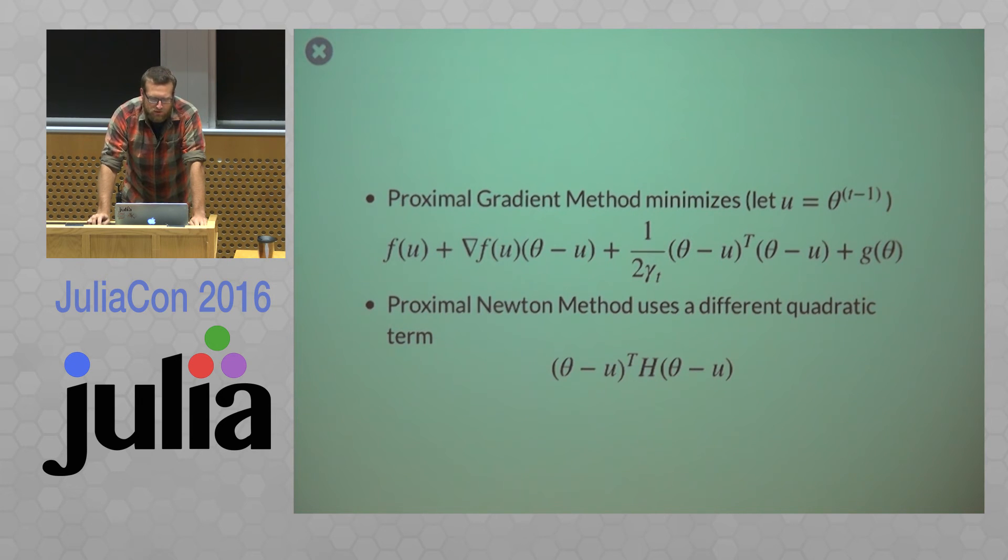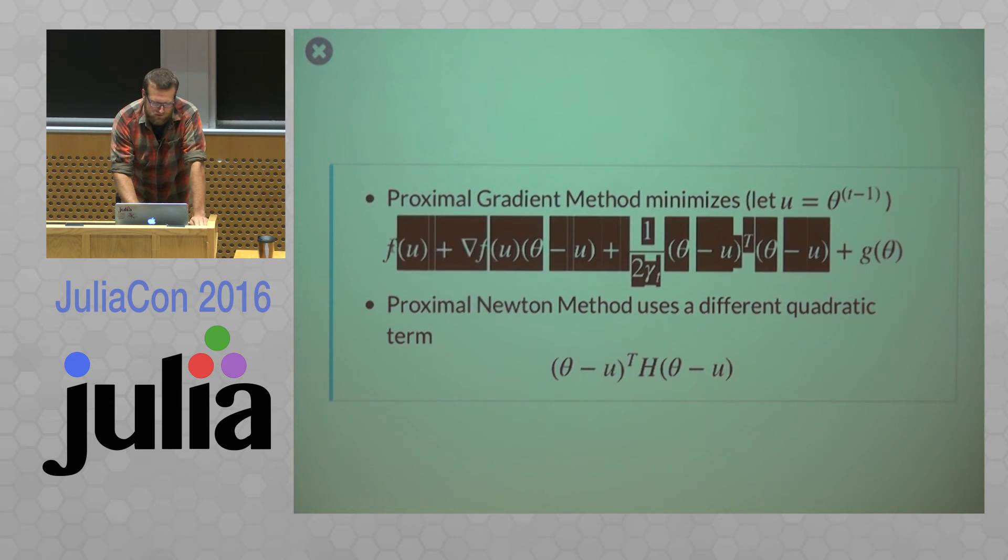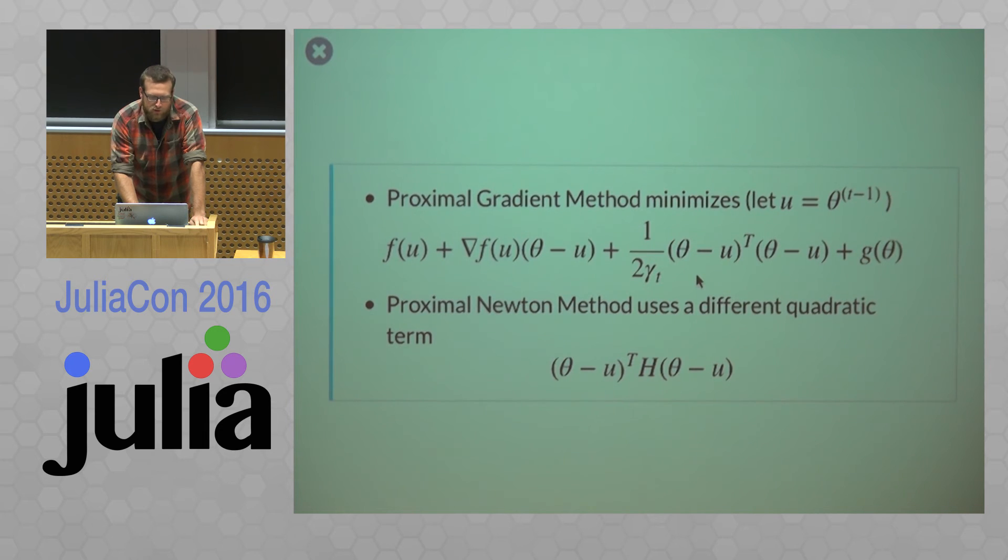So proximal gradient method is minimizing this function. So if we let u equals our old estimate, so we're leaving our g function the same. The only thing we're changing is we're adding this kind of a poor quadratic approximation of our f term. So if it was a true quadratic approximation, we would have a second derivative here, but we're not using that.